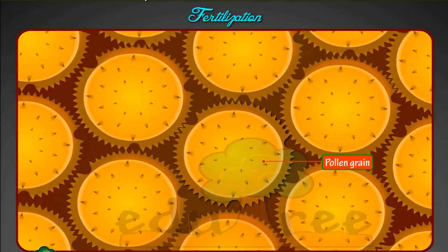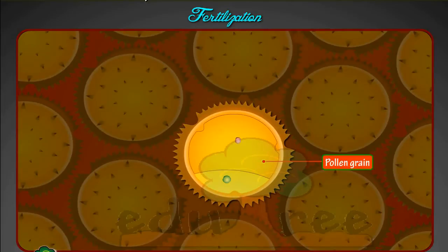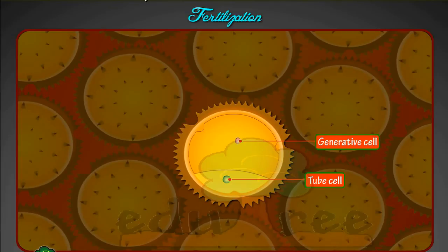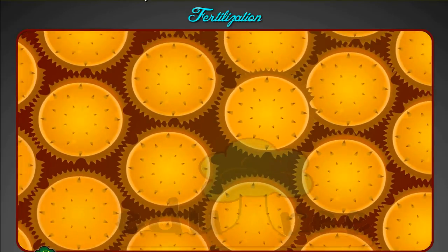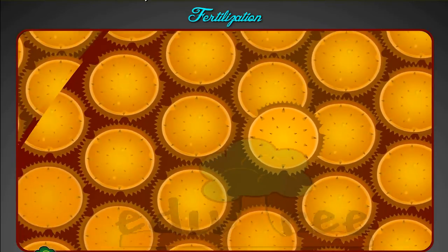The pollen grain contains two main cells. The cell named the tube cell makes up the bulk of the pollen grain, and the sperm cell, which at this stage is known as the generative cell.